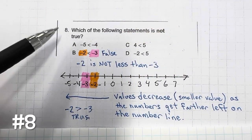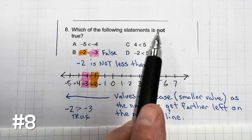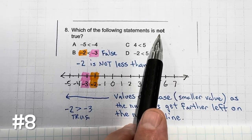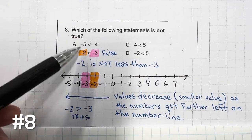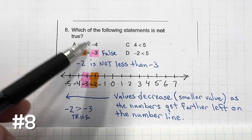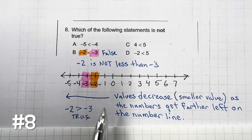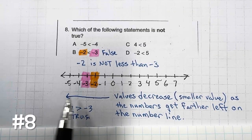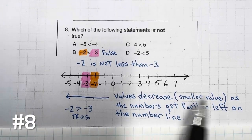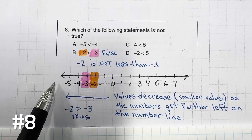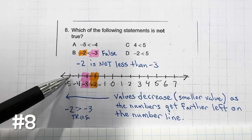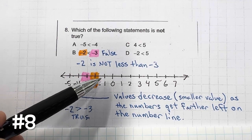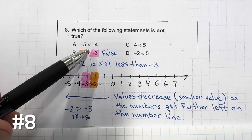Number 8: which of the following statements is not true? Always pay attention when reading — this one asks which is NOT true. Is negative 5 less than negative 4? Remember, values decrease as numbers go farther left on the number line. Here's negative 5 and here's negative 4. As you go to the right the values become greater, so negative 5 is less than negative 4 — that is true. And 4 is less than 5 — the inequality sign eats the greater value — so 4 is less than 5, going to the right where values increase. That is true.